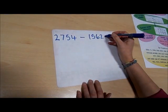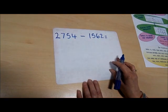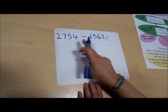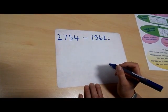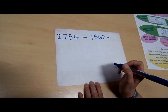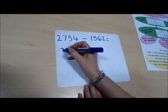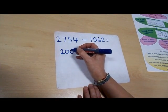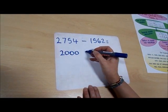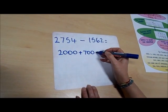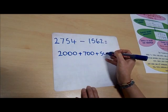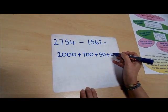First of all, I'm going to do the extended method. So I'm going to partition both of these numbers. So 2,754, when we partition it, is 2000+700+50+4.